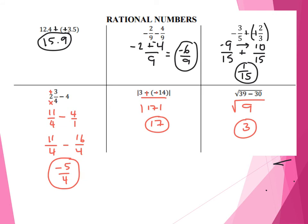Next example — I have the absolute value of 3 minus negative 14. Minus a negative turns into an addition problem, so 3 plus 14 is 17, giving me the absolute value of 17, which describes the distance from 0 — so positive 17. Last one, I have the square root of 39 minus 30. 39 is larger, so this is really easy — 39 minus 30, starting inside, gives me 9. The square root of 9 is 3.